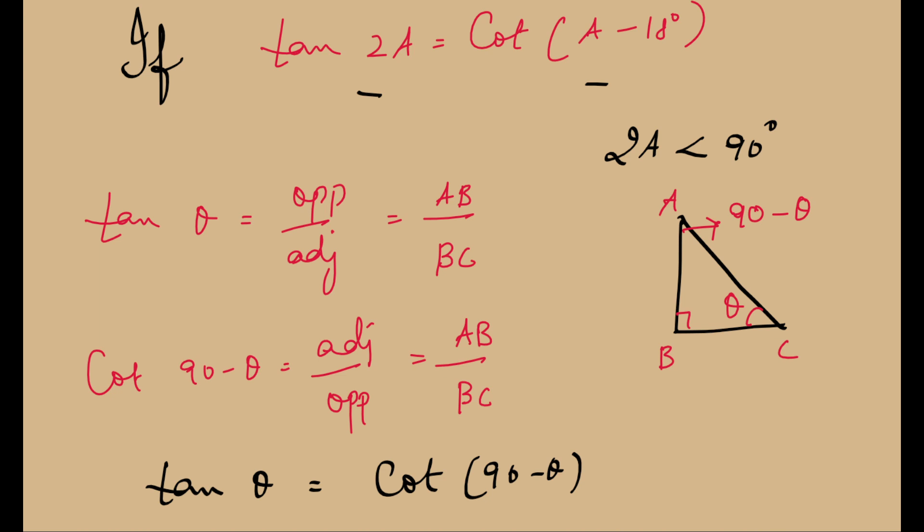And similarly, you can also verify that cot of an angle, cot theta, is equal to tan of 90 minus theta. This you can verify using the same diagram, and we have already done these relationships between trigonometric ratios of complementary angles exclusively in our video in our Math Decoder channel. I will provide the link in the description. Since now we have a relationship between these two, let us try to solve for this sum.